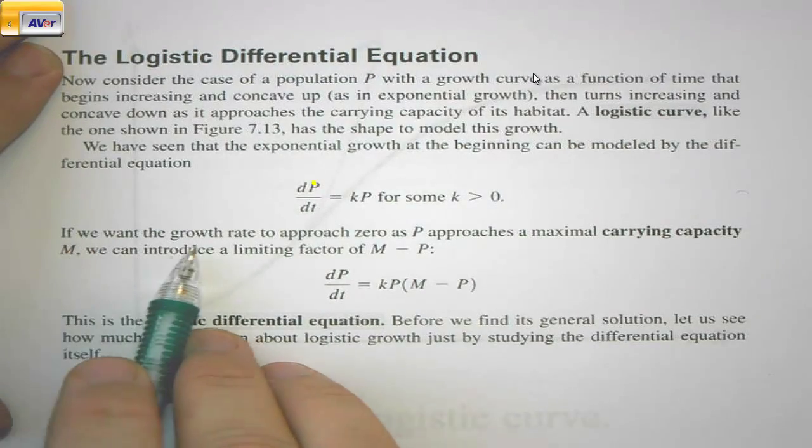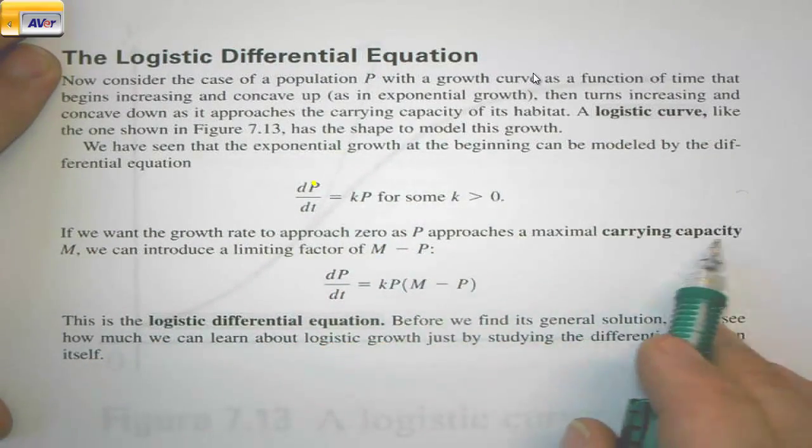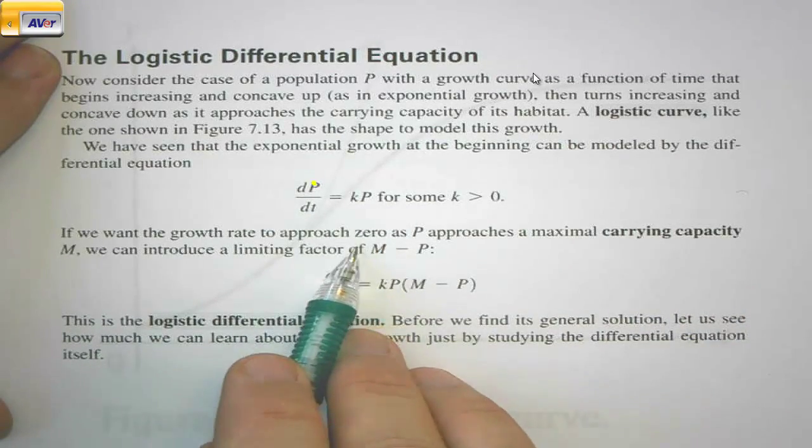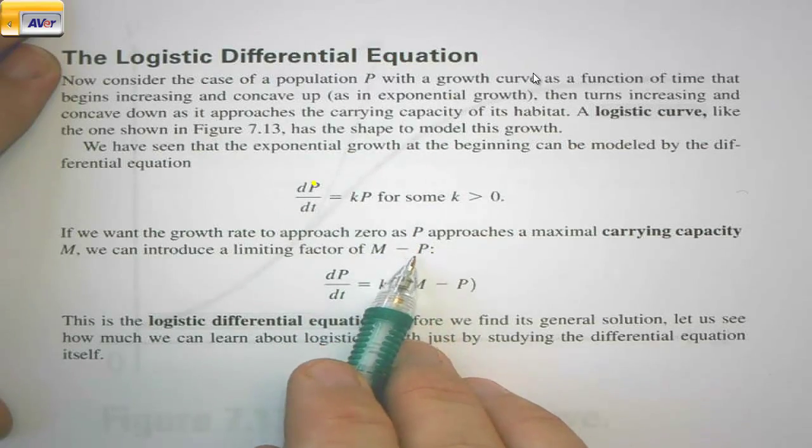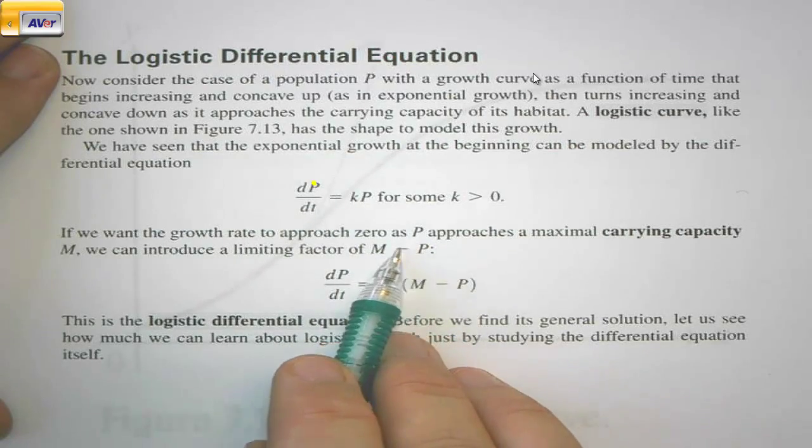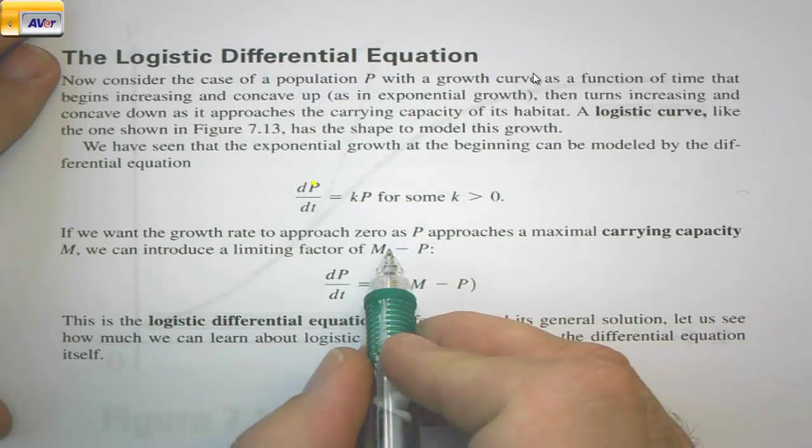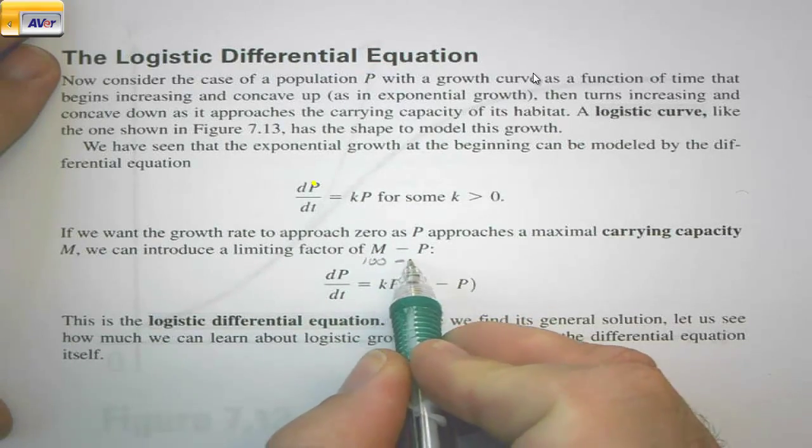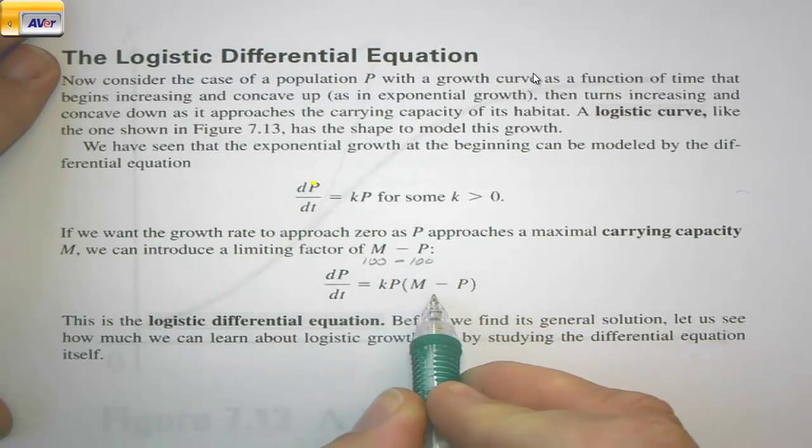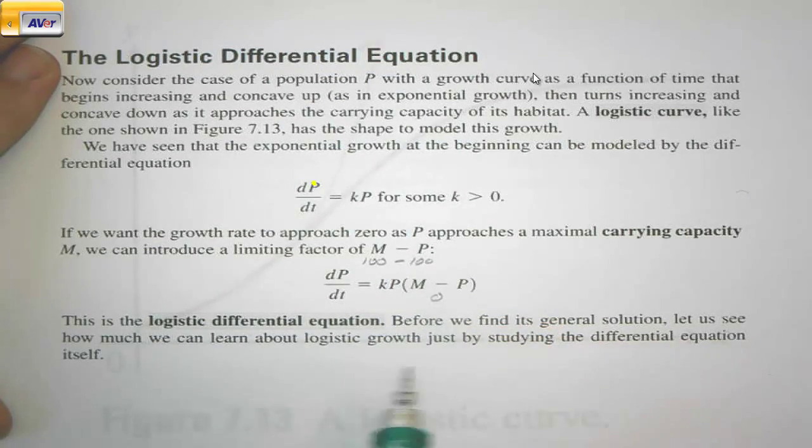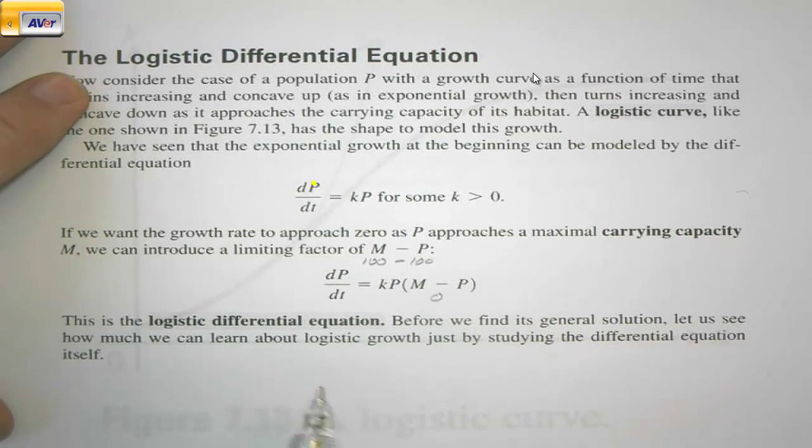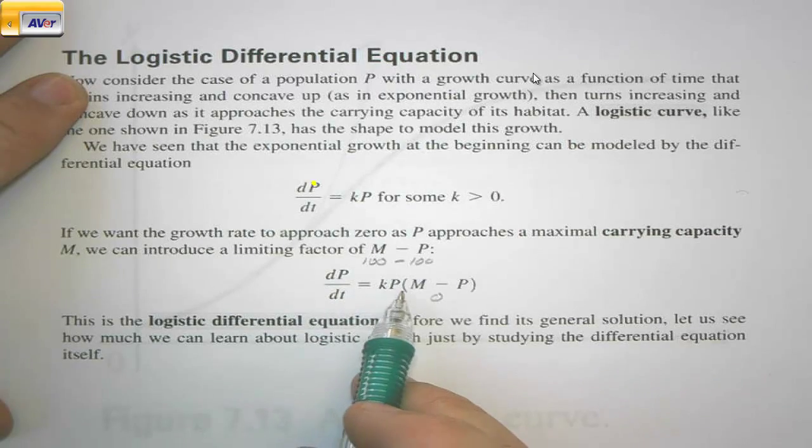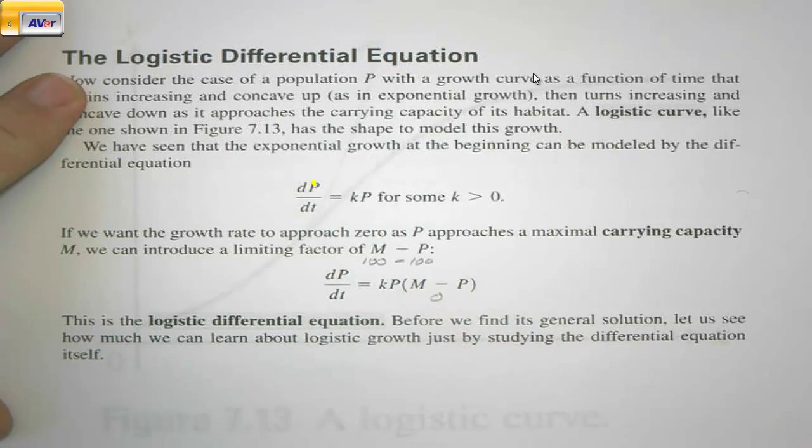If we want the growth rate to approach zero as P approaches a maximal carrying capacity M, we can introduce a limiting factor of M minus P. And once the population reaches that maximum capacity, this factor ends up being 0. So imagine if we had 100 as the maximum and we're subtracting 100, which would be the population, then this piece right here would be 0 and the population wouldn't increase anymore. So the logistic differential equation is dP/dt = kP(M - P).